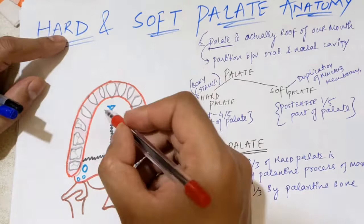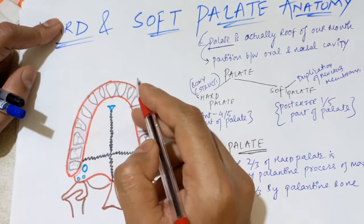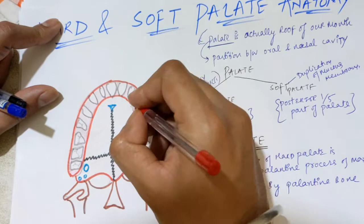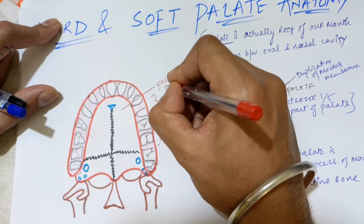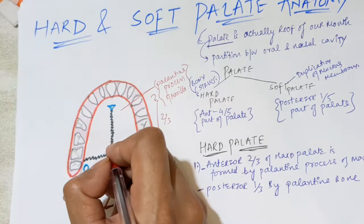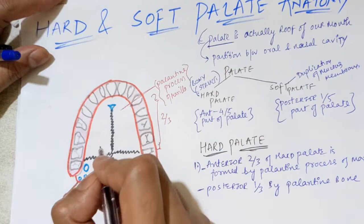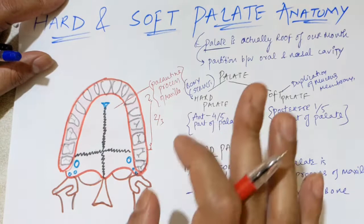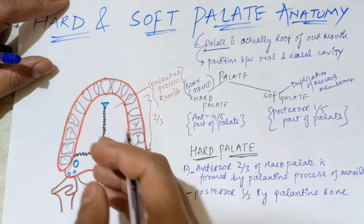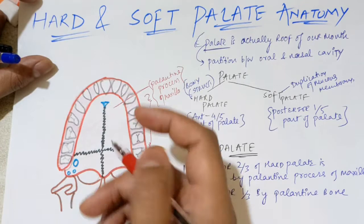In this diagram, you can see the teeth — the alveolar region, the gums, and the alveolar margins. The anterior two-thirds area is formed by the palatine process of maxilla. In maxilla, there are four processes: frontal process, palatine process, alveolar process, and a fourth one. The palatine process forms the anterior portion of the hard palate.